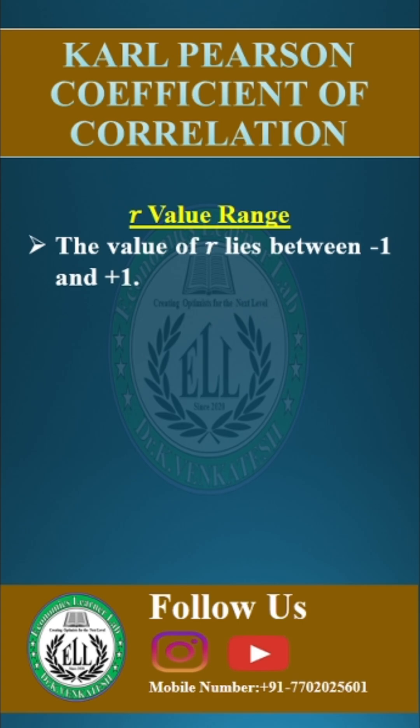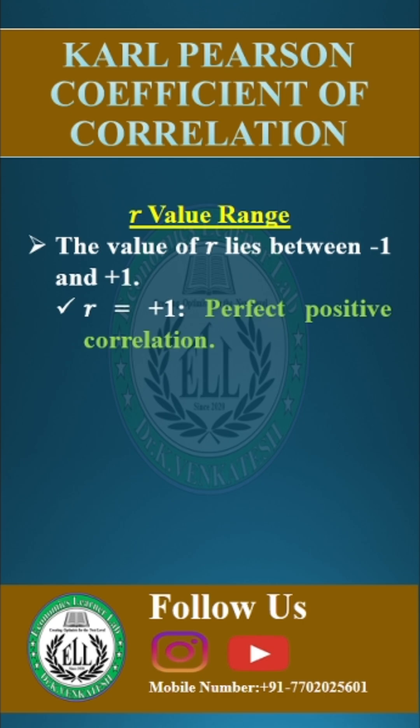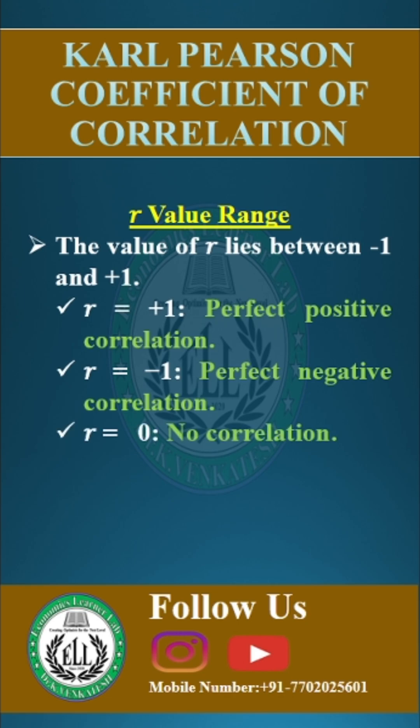Interpretation of R value: The value of R lies between minus 1 and plus 1. If R equals plus 1, there is perfect positive correlation — as one variable increases, the other also increases. If R equals minus 1, there is perfect negative correlation — as one variable increases, the other decreases. If R equals 0, there is no correlation, meaning no linear relationship between the variables.